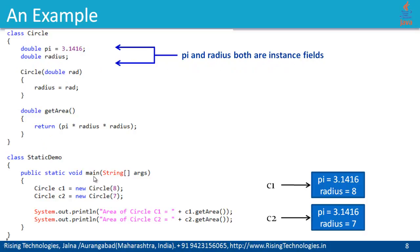In the main program, I have created two instances of this circle class with different radius values. C1 and C2 are the instances. The first instance has radius 8 and pi is 3.1416. The second instance referred by C2 has radius 7 and pi is 3.1416. No matter how many instances of this circle class I declare, the value of pi will remain the same. So there is no sense declaring copies of pi per instance. Instead of declaring pi as an instance field, we can declare it as a static field.